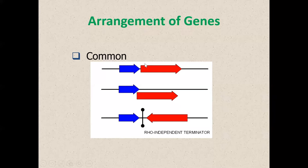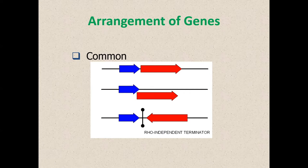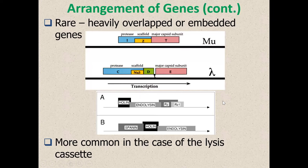Regarding the arrangement of genes on the genome, the most common arrangement has a small gap between two coding sequences, or the coding sequences actually overlap by a limited number of nucleotides. Occasionally you'll see coding sequences transcribed in opposite directions; where they meet, there's probably a termination signal in the DNA preventing transcription through that region. There are also relatively rare cases where ORFs can be heavily overlapped with other genes, as in Mu and Lambda, where two genes are buried within the capsid synthesis gene.